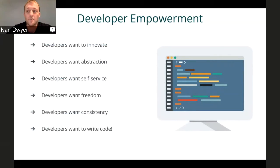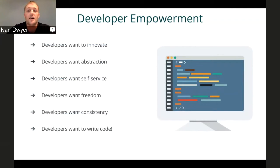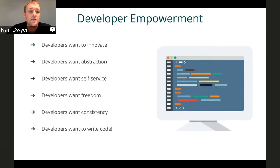Developers want abstraction. They don't want to have to worry about dealing with infrastructure. They want to be able to get up and running themselves without involving IT. They want the freedom to use the languages and tools they're most familiar with and what fits the right job. And of course, they want consistent environments across dev, test, staging, and production — without having to do a ton of configurations and always checking where they are in the lifecycle.